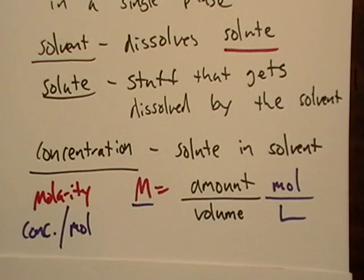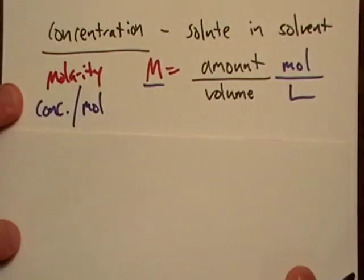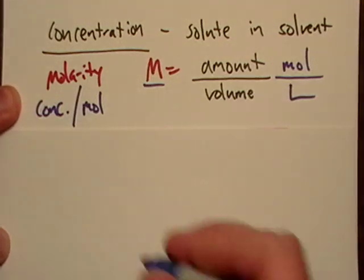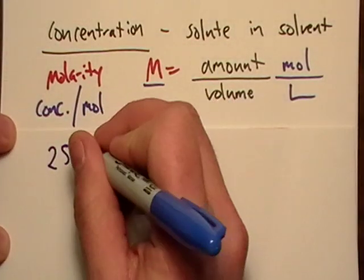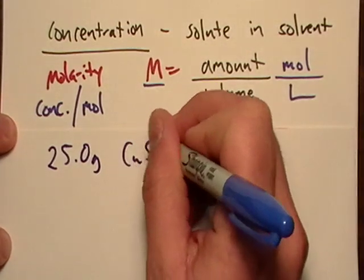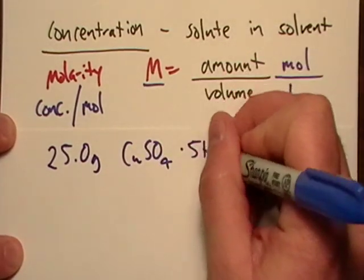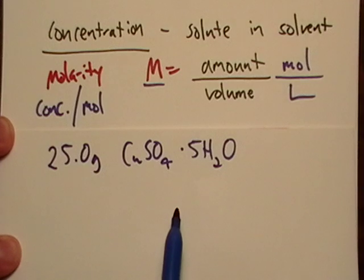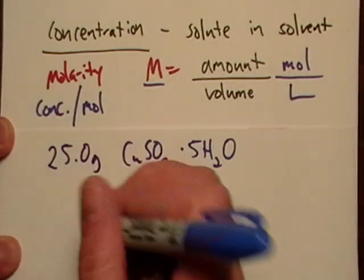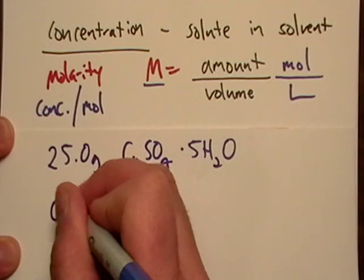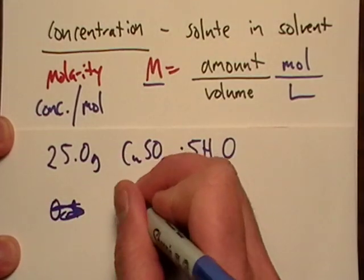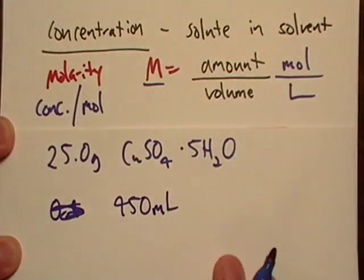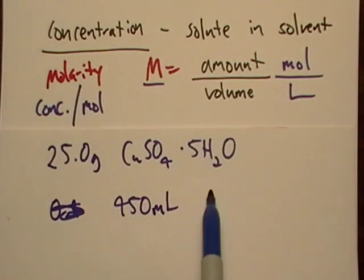Okay, so just for starters, just to get kind of messing around. Let's say I have 25.0 grams—I've already wrote this one out, I'm not making this up off the top of my head. I got 25 grams of copper 2 sulfate pentahydrate, and I've got 450 milliliters total when it's all said and done.